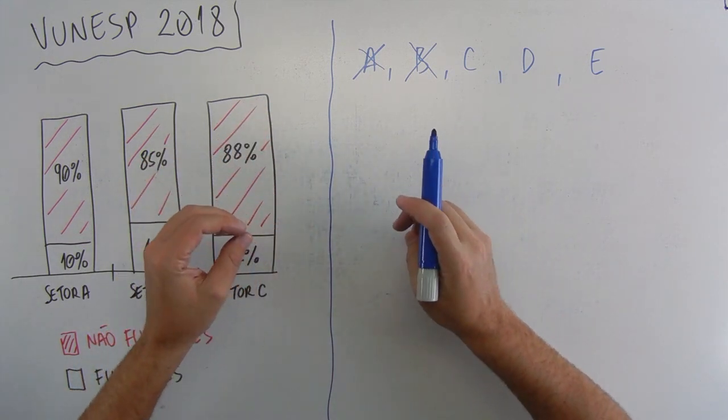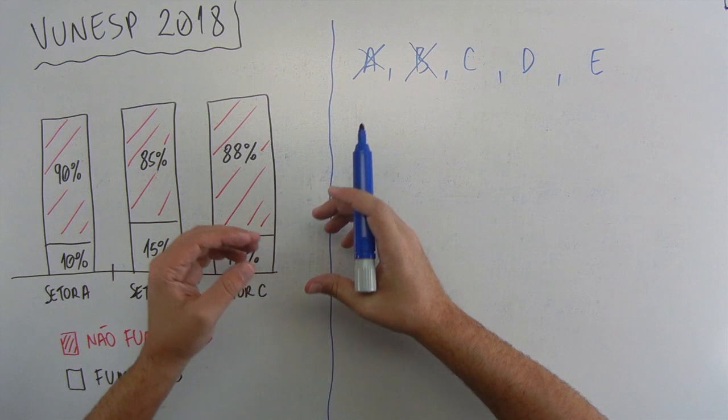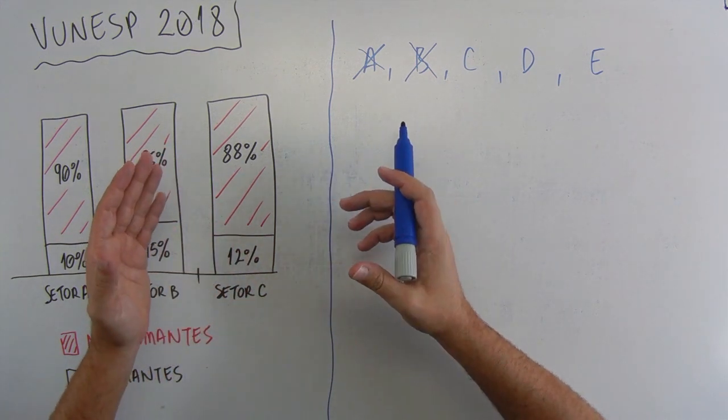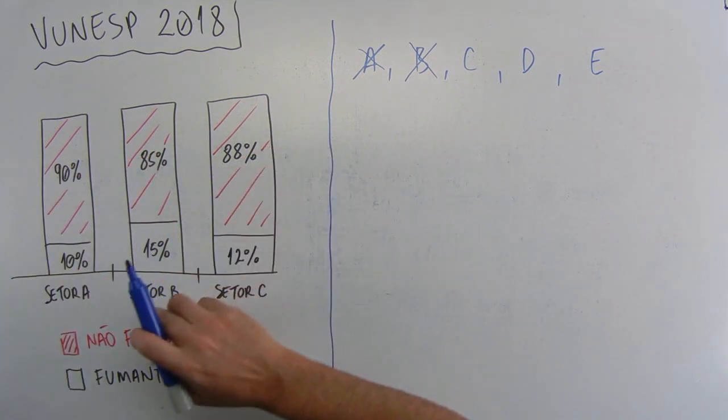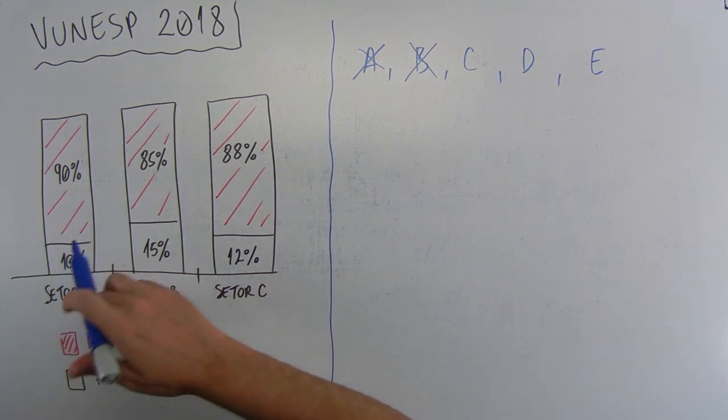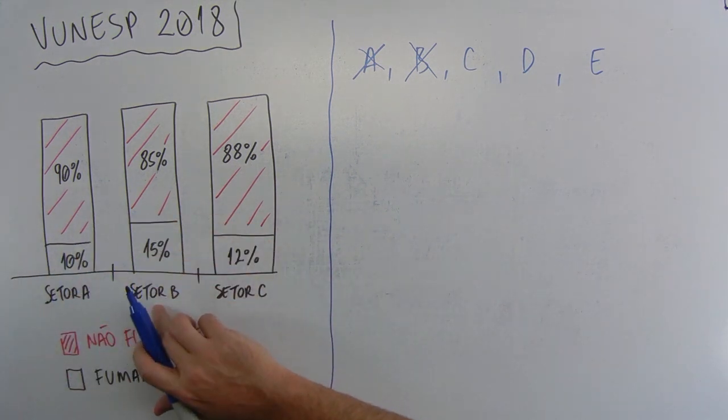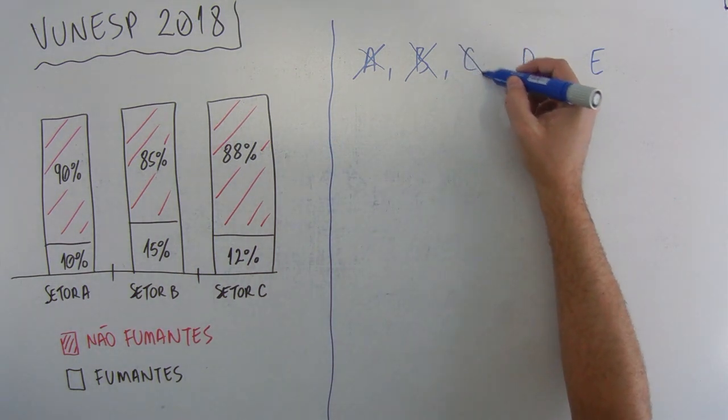O número de não fumantes no setor A é seis vezes o número de fumantes no setor B. Como que eu consigo saber isso se eu não tenho a quantidade de fumantes no setor A e muito menos a quantidade de fumantes no setor B? Então, a alternativa C está fora também.